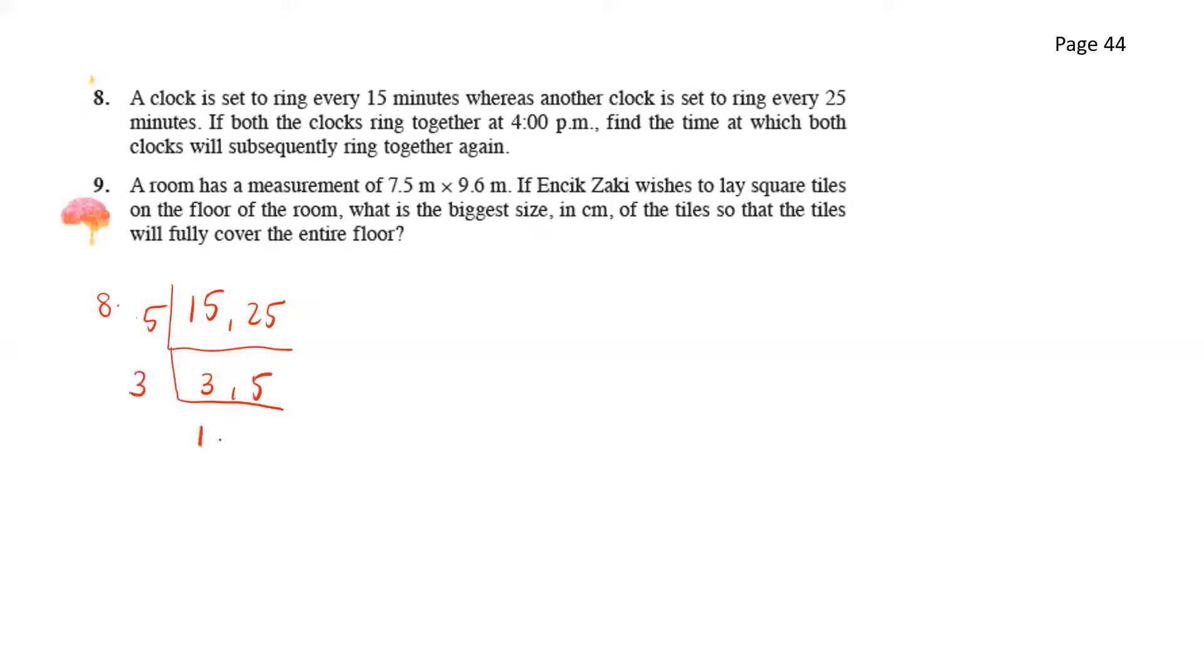Dividing it by 3 again gives us 1 and 5 and dividing this by 5 gives us 1 and 1. For lowest common multiple, remember that the final answer here should always be 1 and 1. So now that we have divided it until we get the final answers of 1 here, let's find the lowest common multiple. We have 5 times 3 times 5 and that will give us 75 minutes. So we also know that 75 minutes is actually 1 hour and 15 minutes. So if from 4 pm we add 1 hour and 15 minutes, that will give us 5:15 pm.